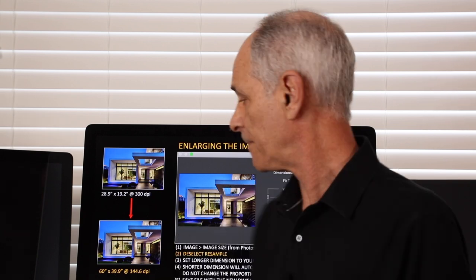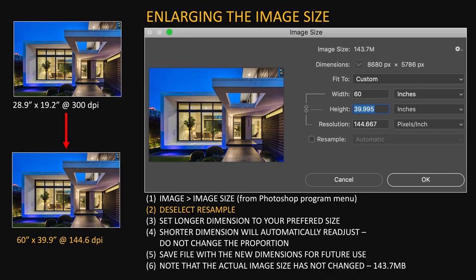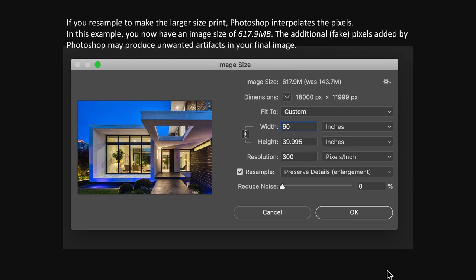You might say that's not enough resolution to print — yes, it is. Save that file with the new dimensions. Notice the original file was 143.7 megabytes. When you change the image size without resampling, the actual image size has not changed — it's still 143.7 megabytes. You have not tortured your pixels to make the bigger print. If you resample to make a 60 by 40, the image size goes all the way up to 617 megabytes.